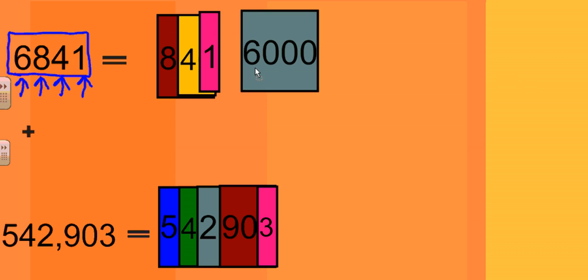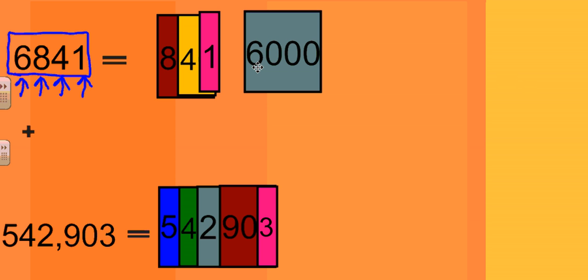We start by looking at the first digit and work from left to right, just as you would read. The first digit is 6, and it is in the thousands place. Therefore, we multiply 6 times 1000 to give us 6000, and we put an addition sign in between to make this expanded form — so that it is in fact a sum.